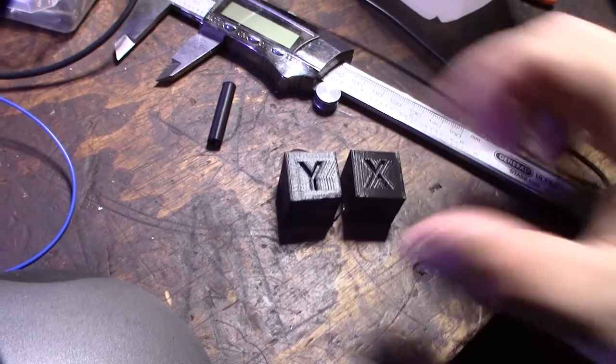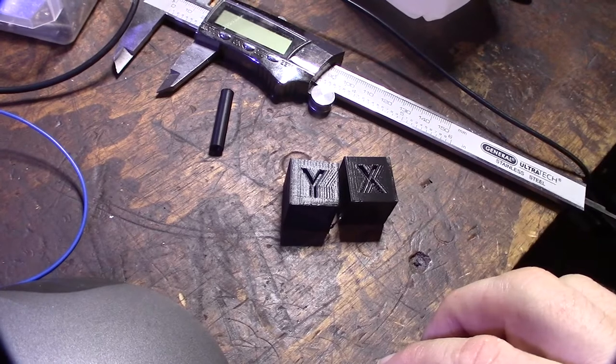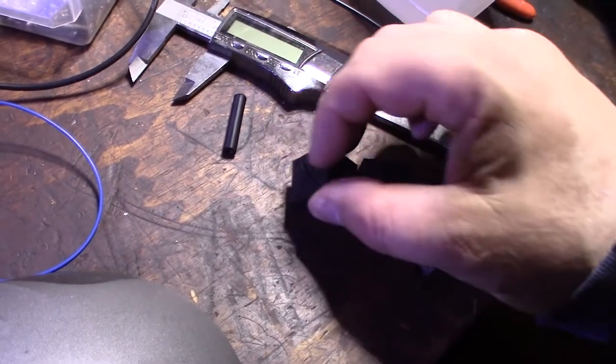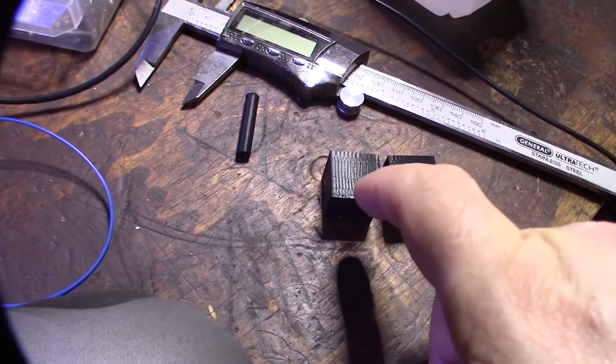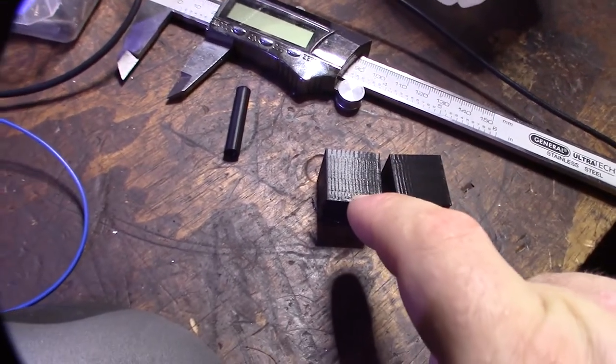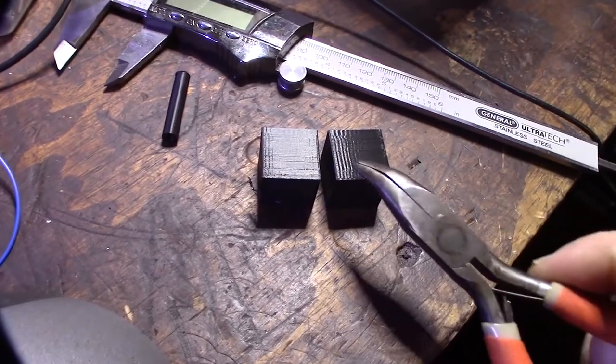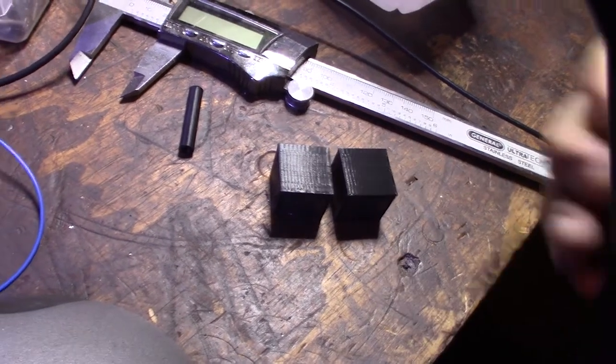That's the Y side. It definitely appears to be improved here on the top. See that little line right there, that little band? That line is definitely reduced on this new block here.